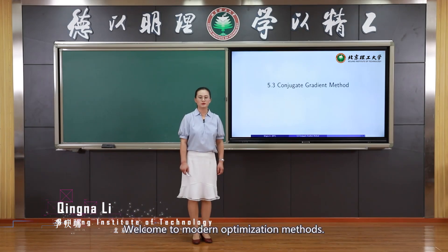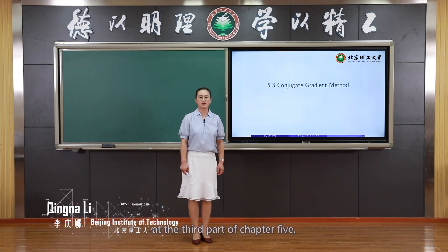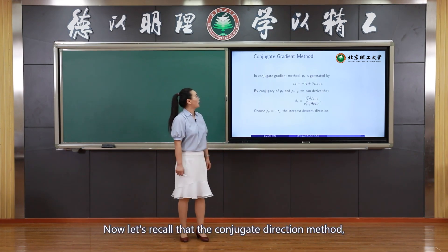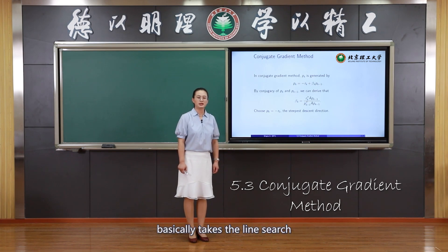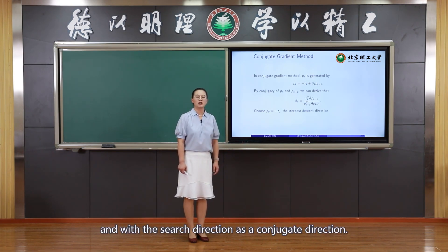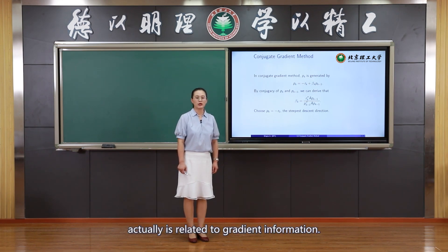Hi everyone, welcome to modern optimization methods. Today we will take a look at the third part of chapter 5, the conjugate gradient method. The conjugate direction method takes the line search strategy with the search direction as a conjugate direction. The conjugate gradient method is actually related to gradient information.